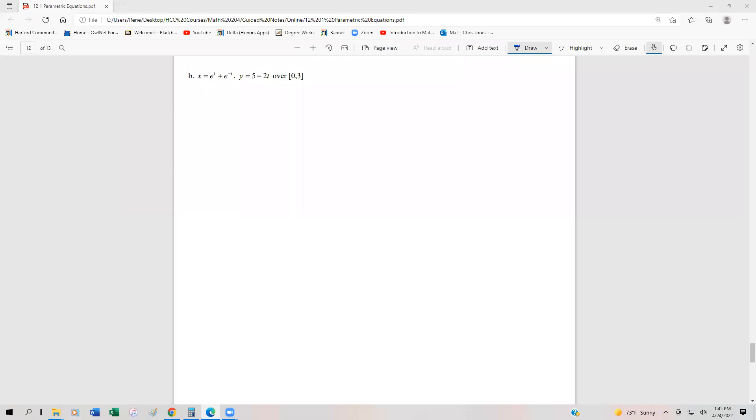One final example of parametric equations and working with those, finding the arc length. We have x = e^t + e^(-t) and y = 5 - 2t, and we're trying to find the arc length from 0 to 3 of that parametric.